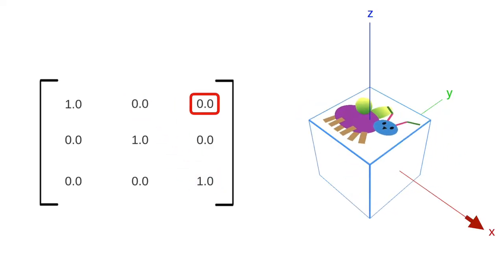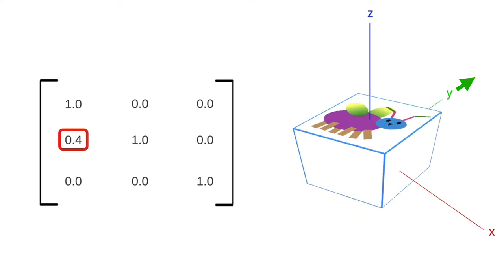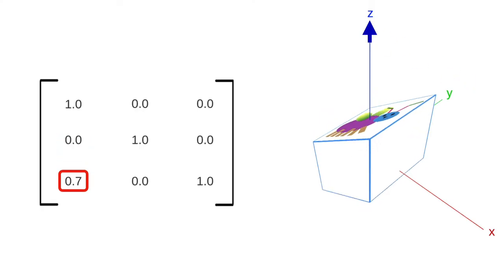And all the rest are shears along the x, y, and z axes. There are six shears in total.